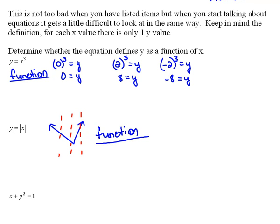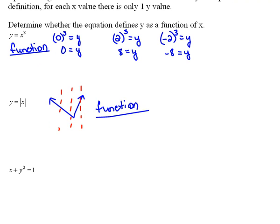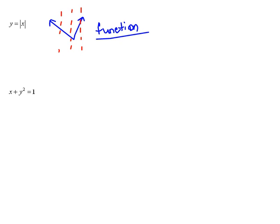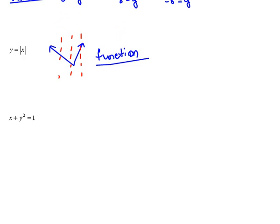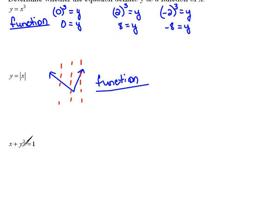Now we need to look at something that is not a function so you can see the difference. This equation here — if you'll notice from the first two that we did — what is so different about this equation than the previous two? Well, if we look, we see that the first one was y equals something, the second one was y equals something, but this one is x plus y squared equals something.